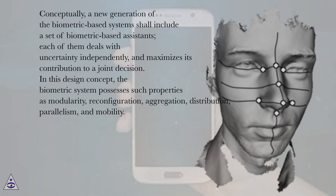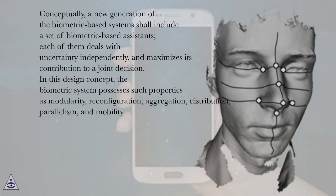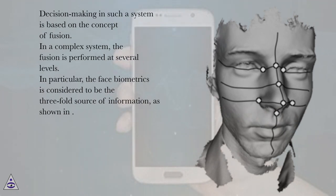Conceptually, a new generation of the biometric-based systems shall include a set of biometric-based assistants; each of them deals with uncertainty independently, and maximizes its contribution to a joint decision. In this design concept, the biometric system possesses such properties as modularity, reconfiguration, aggregation, distribution, parallelism, and mobility. Decision-making in such a system is based on the concept of fusion. In a complex system, the fusion is performed at several levels.